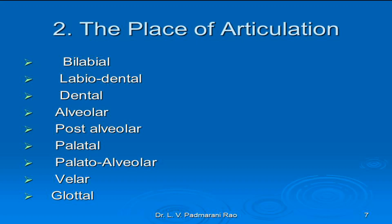Alveolar is the next place of articulation. Sounds that are articulated by the blade of the tongue against the teeth ridge or alveolar ridge are called alveolar sounds. The examples include T, D, SH, S, Z, and N. These are called alveolar sounds where the tip of the tongue goes and articulates with the teeth ridge or the alveolar ridge.